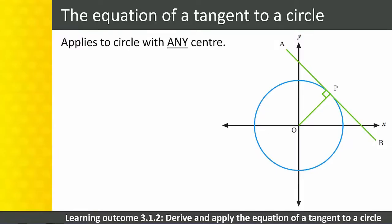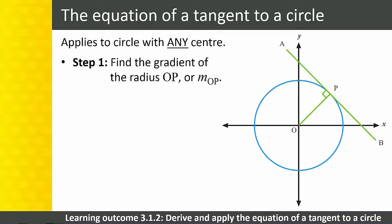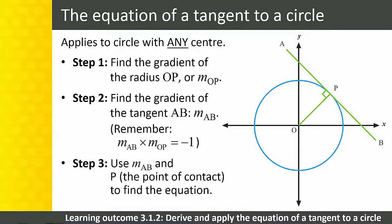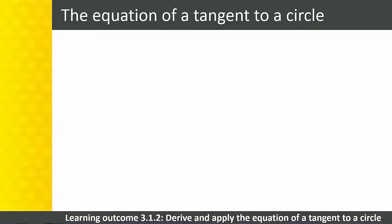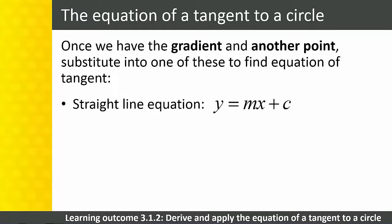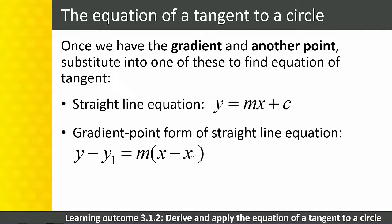To find the equation of the tangent, follow three steps. Step 1: find the gradient of the radius OP, M_OP. Step 2: find the gradient of the tangent AB, M_AB — remember that M_AB times M_OP equals negative 1 because the radius is perpendicular to the tangent. Step 3: use M_AB and point P, the point of contact, to find the equation. Substitute the gradient and a point into y = mx + c or the gradient-point form.